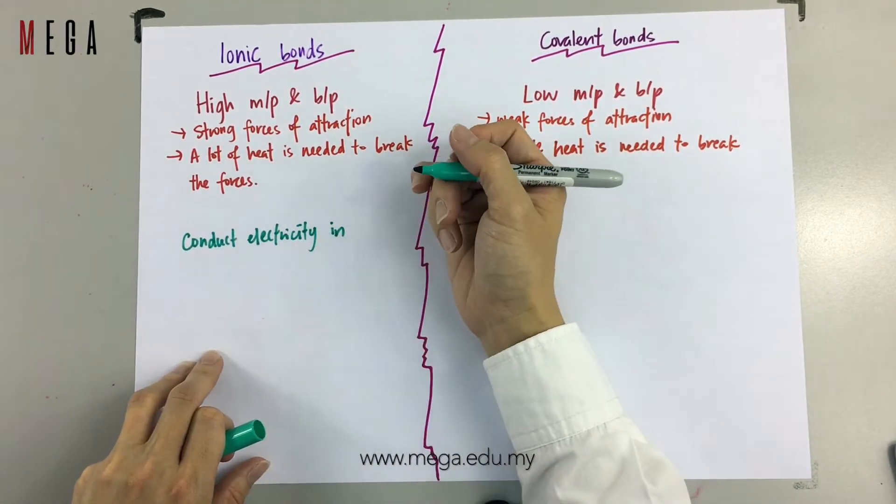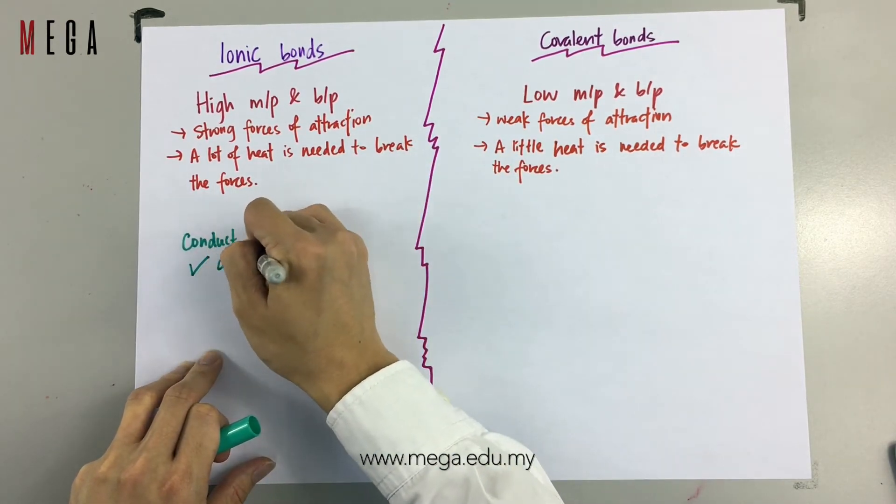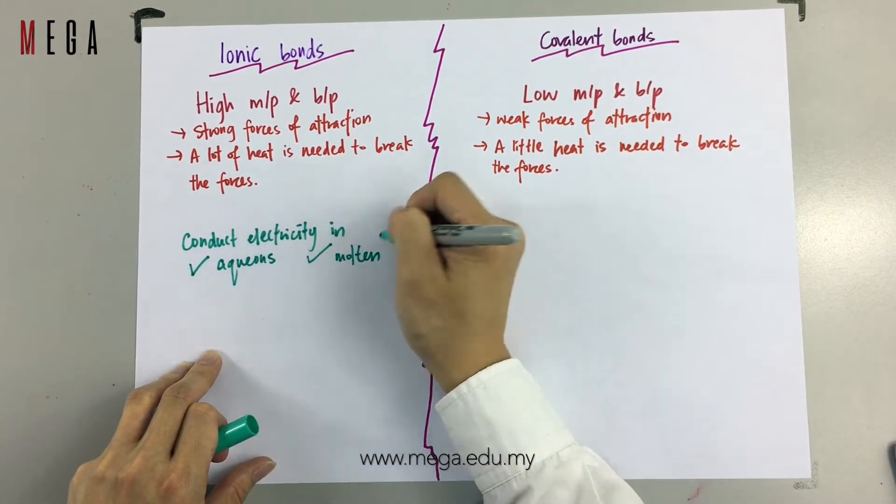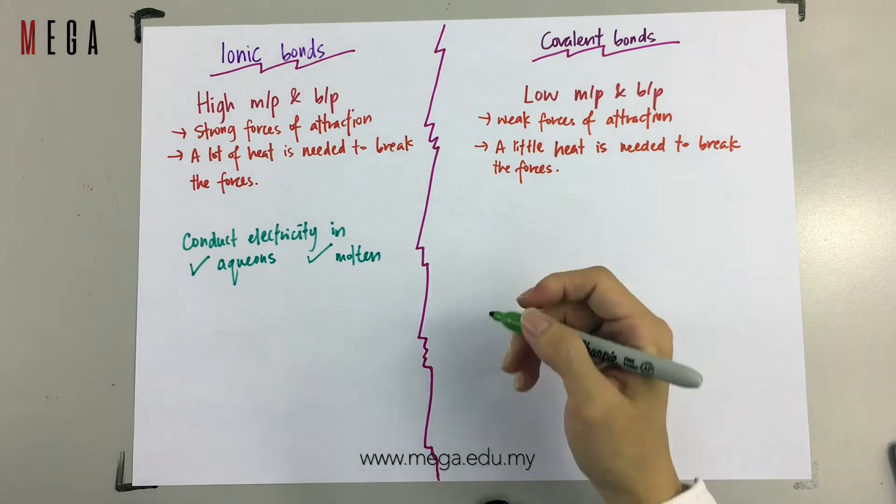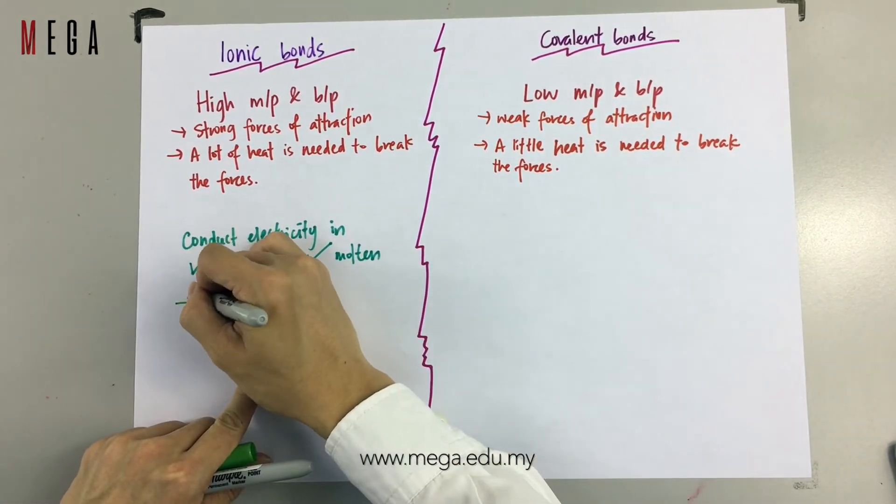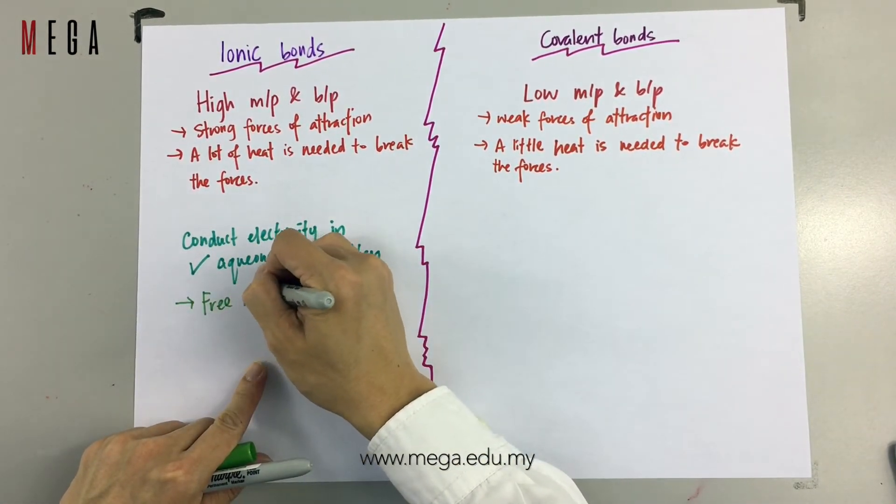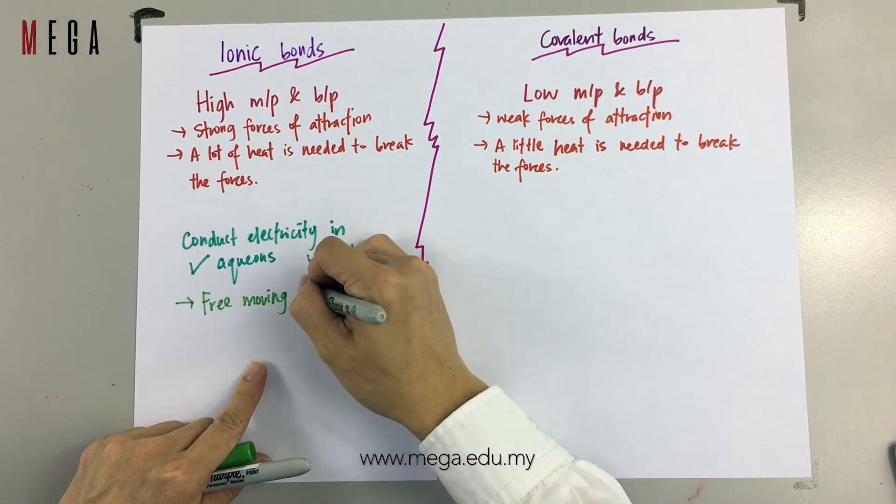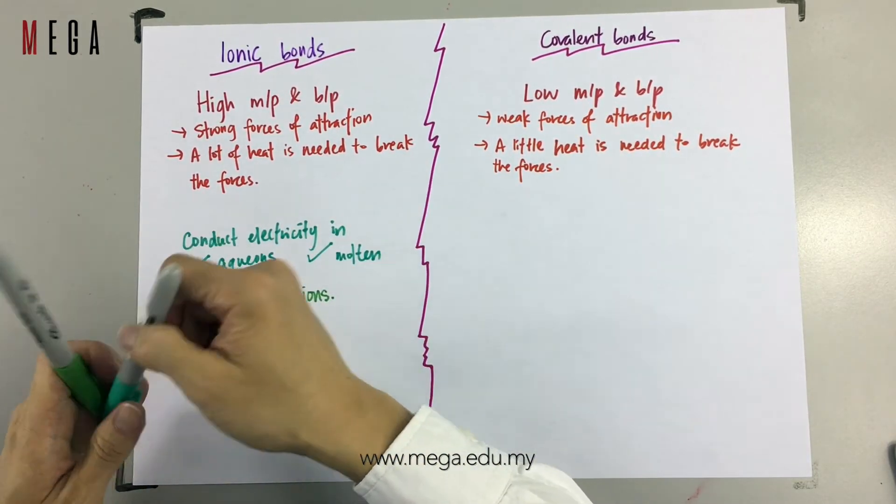in terms of conductivity of electricity, ionic compounds can conduct electricity in both aqueous and molten state because they contain free moving ions to conduct the charge and carry the electricity.